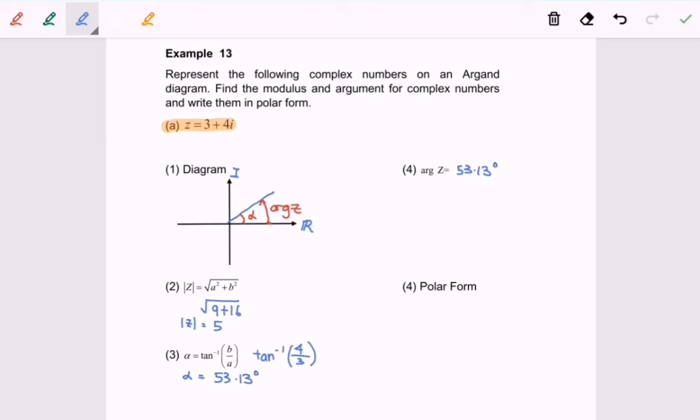Do remember, we have to express the argument of Z in the form of radian. So now, the argument of Z is equal to 0.927 radian.